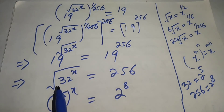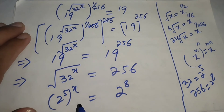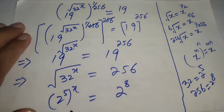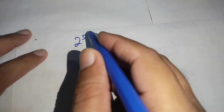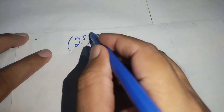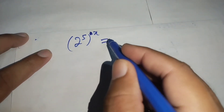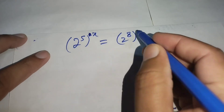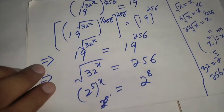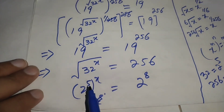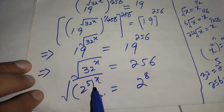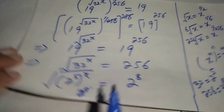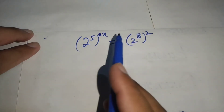Here we need to eliminate the square root, so we square both sides. When we square both sides, the square root is eliminated, and we get 2 to the power 5, whole to the power 2x, equals 2 to the power 8, whole to the power 2.